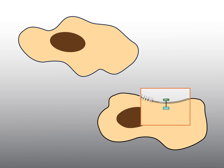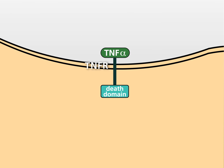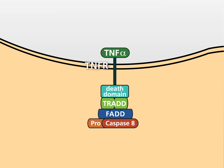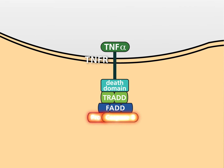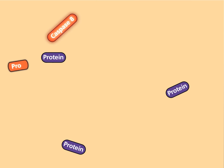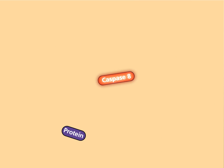TNF-alpha binds to the TNF receptor at the outer membrane of the cell. Subsequently, the so-called death domain at the cytoplasmic side of the receptor is activated. As a result, cytosolic proteins with their own death domains bind and are activated. The first protein that binds to the cytosolic part of the receptor is the TNF receptor-associated protein with death domain, or TRAD. Next, the protein FAS-associated protein with death domain binds, which recruits Procaspase 8. This protease is able to auto-catalyze the hydrolysis of its inhibiting segment, leading to active Caspase 8, which disassociates from the receptor and is then able to initiate the caspase cascade.